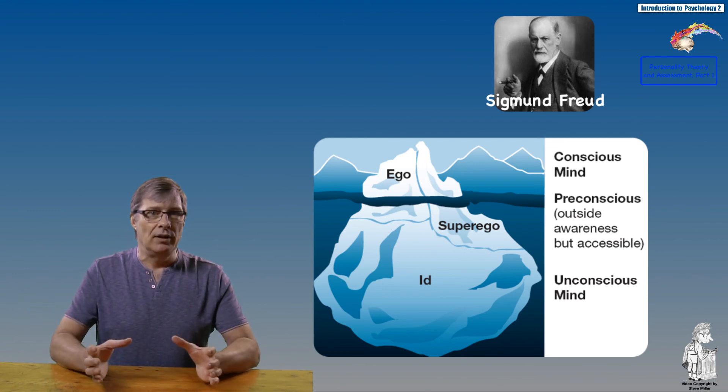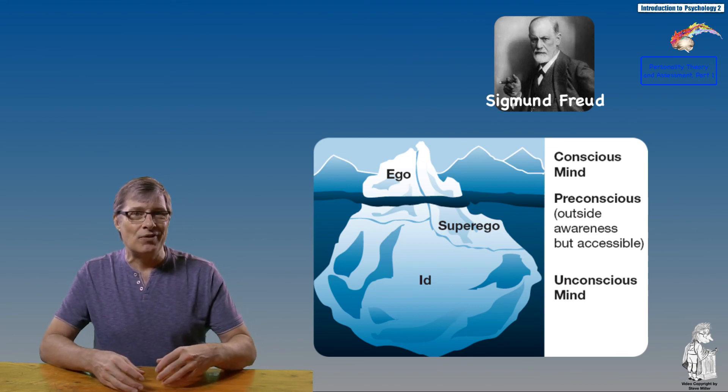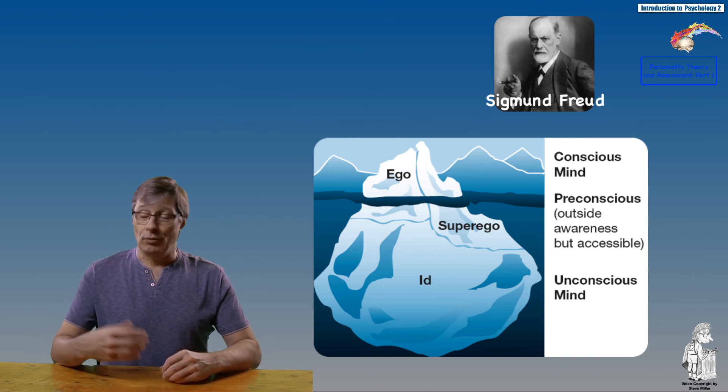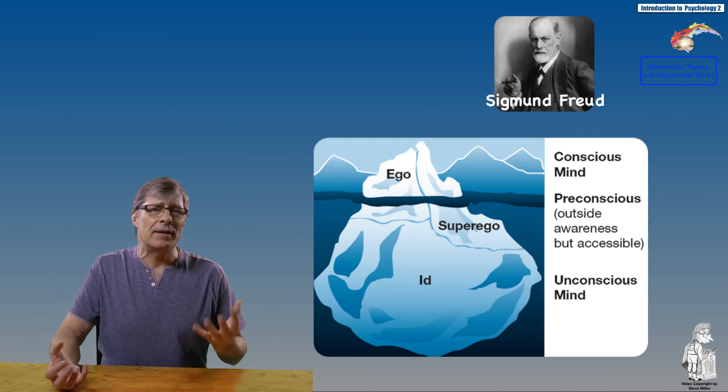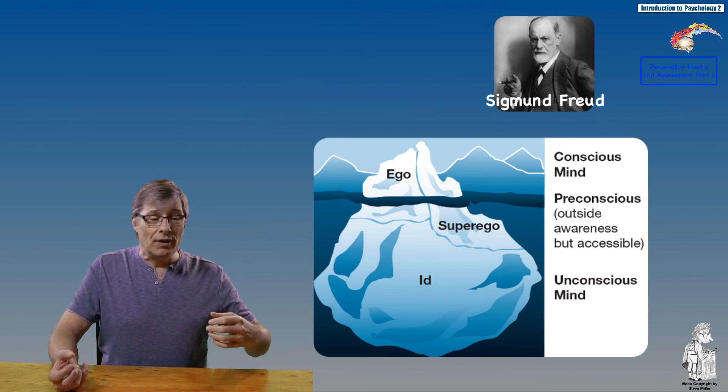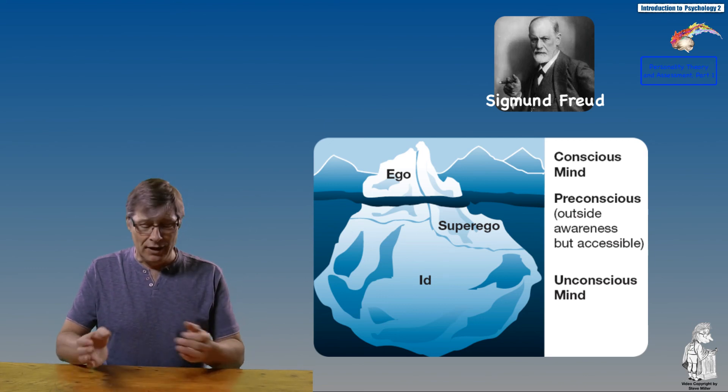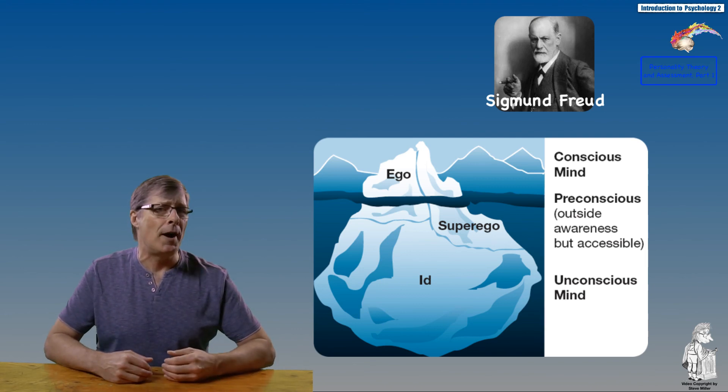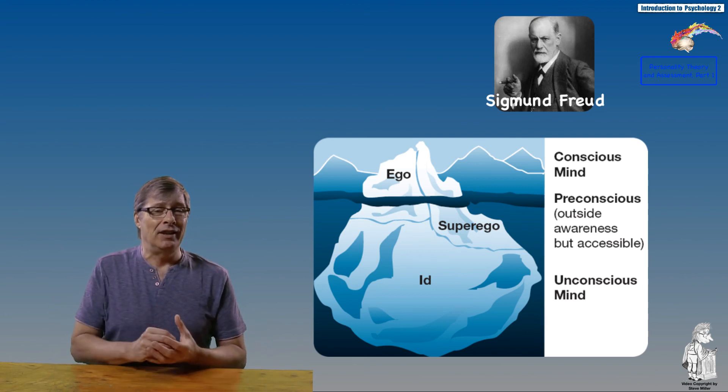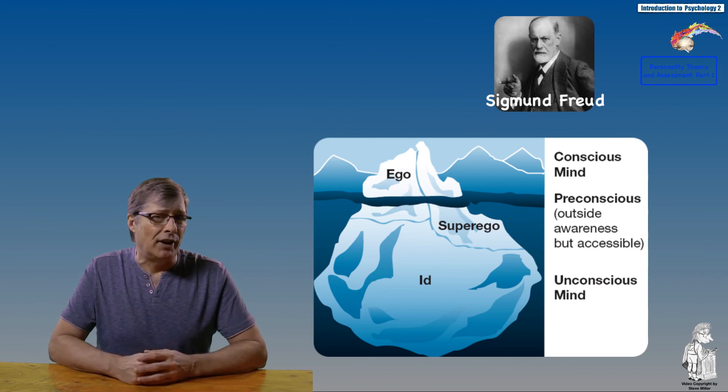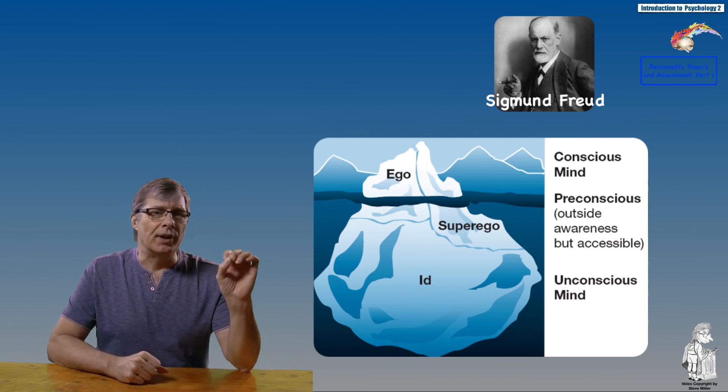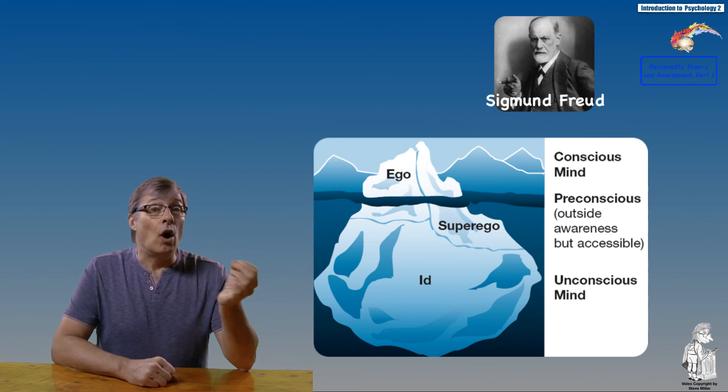The conflict between the demands of the id and the rules and restrictions of the superego lead to anxiety for the ego. The superego holds all the rules and restrictions of what society expects. The id drives all the primitive and pleasure-based thoughts, feelings, and ideas. The ego negotiates what gets through and what does not.